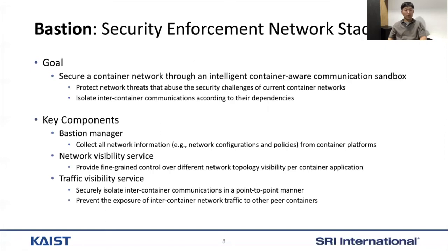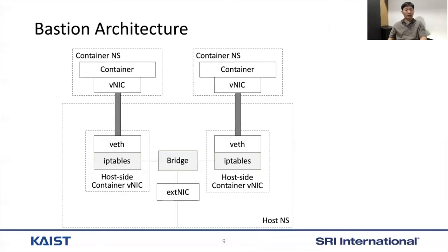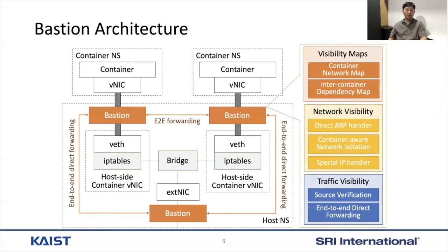To achieve such goals, we designed three key components: the Bastion manager, and the network visibility and track visibility services, which are two key services of Bastion's security staff. Bastion is deployed at the network interface of each container, and additionally at the external interface for the overhead network in the case of Kubernetes. We don't modify any existing container platform or container network, but all network traffic is controlled at the closest locations from containers and delivered to destinations through Bastion, instead of a container network, for security purposes.